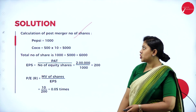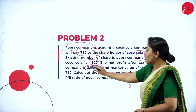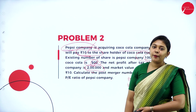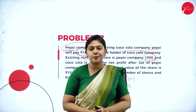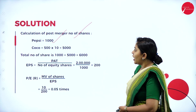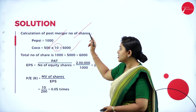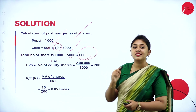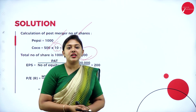Calculation of post-merger number of shares: Pepsi company has 1,000 shares. Coca-Cola has 500 shares, and the market price per share is 10 rupees per share. So Coca-Cola's 500 shares multiplied by 10 rupees equals 5,000. The total number of shares after merger is 1,000 plus 5,000, which equals 6,000 shares.